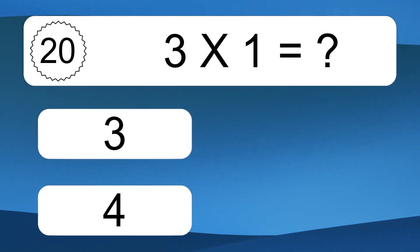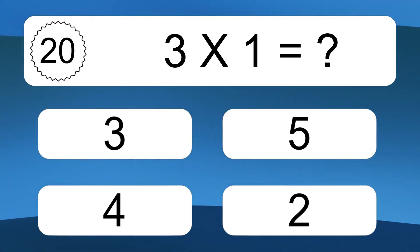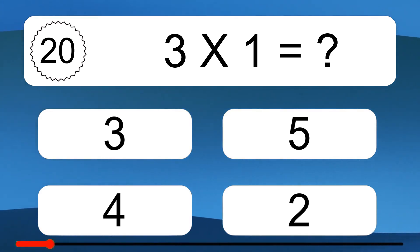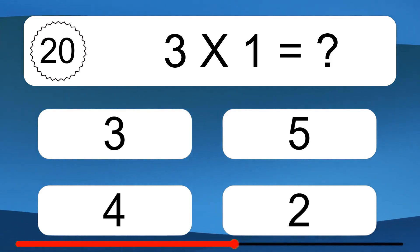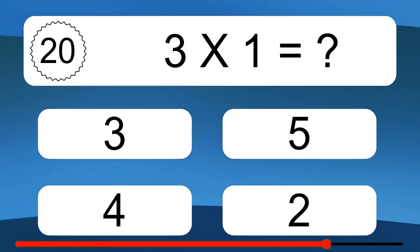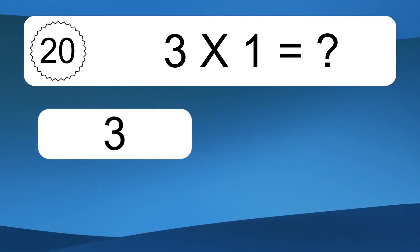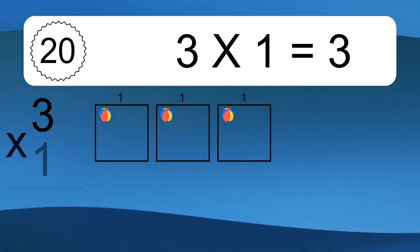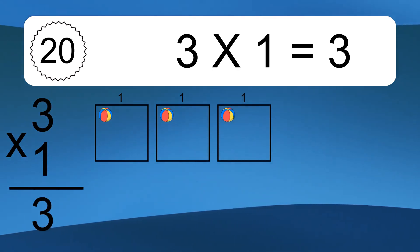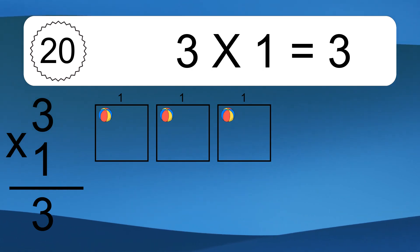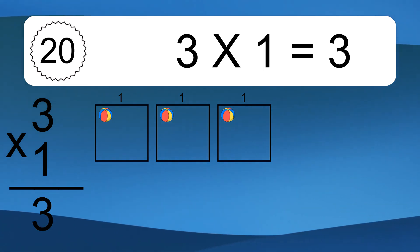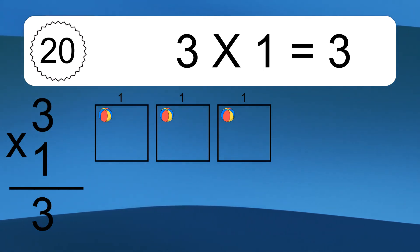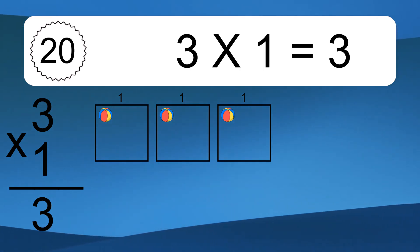3 times 1 equals what? 3 times 1 equals 3. We have 3 boxes, and each box has 1 colorful ball inside. If you count all the balls in all the boxes together, you will have 3 times 1 balls. This equals 3 balls.